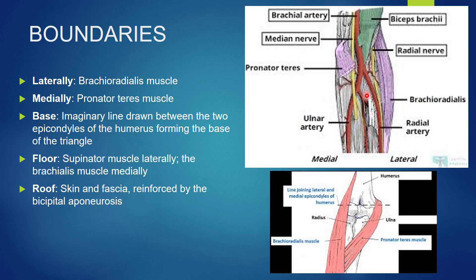In the floor we can see two muscles: the supinator muscle on the lateral side and the brachialis muscle on the medial side. The roof is formed by the skin and the fascia reinforced by the bicipital aponeurosis.